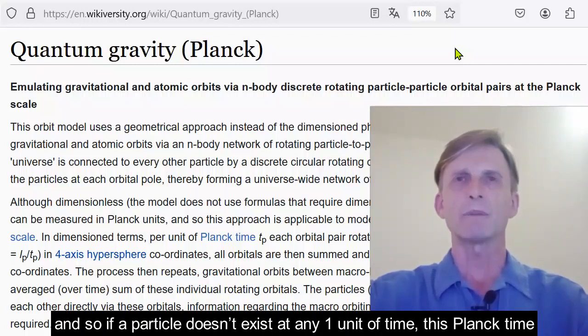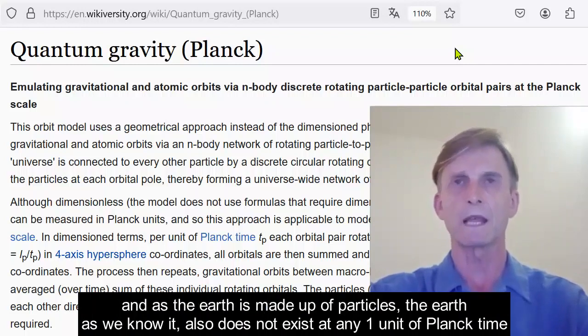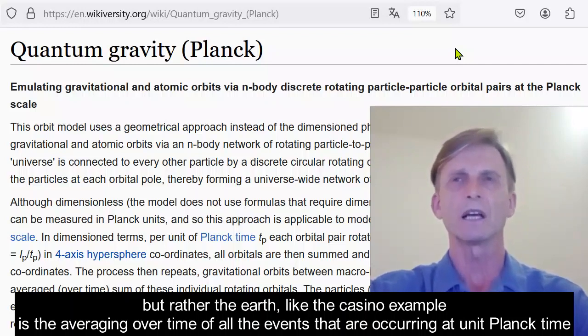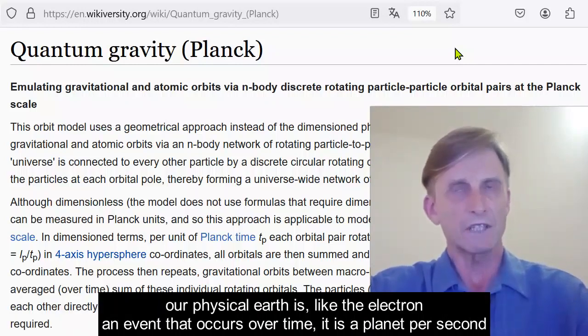And so, if a particle doesn't exist at any one unit of time, this Planck time, and as the Earth is made up of particles, the Earth, as we know it, also does not exist at any one unit of Planck time, but rather the Earth, like the casino example, is the averaging over time of all the events that are occurring at unit Planck time. Our physical Earth is, like the electron, an event that occurs over time. It is a planet per second.